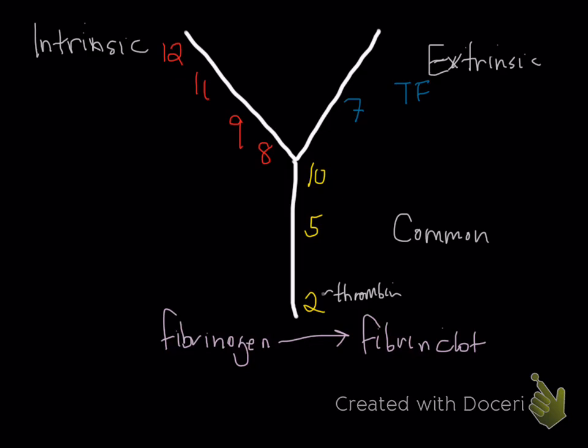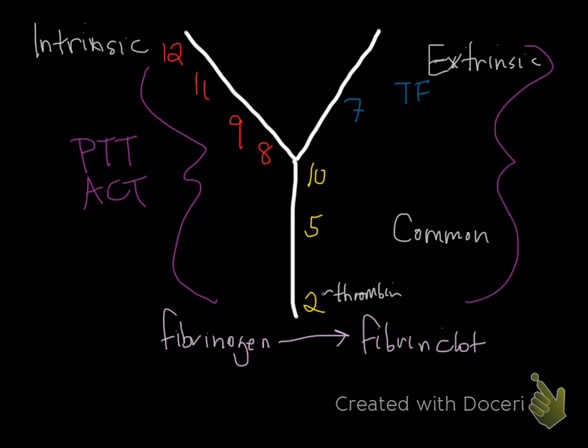How do we test these pathways? The intrinsic pathway is tested by PTT and ACT. Since the test detects a clot, it also includes the common pathway — so both are included. The extrinsic and common pathways are tested by PT. I remember this because there's only factor 7 on the extrinsic side, it's shorter, and PT is a shorter name. There's also a rarely used test called the thrombin time, or TT, which tests the conversion of fibrinogen into fibrin — it doesn't directly involve factor 2.